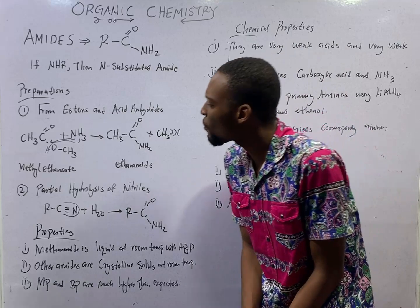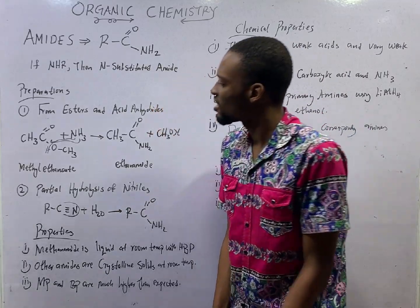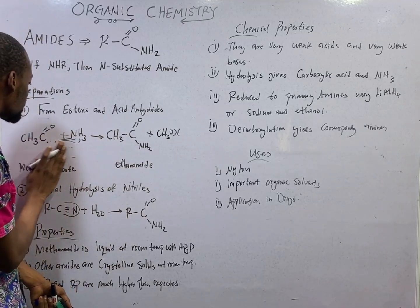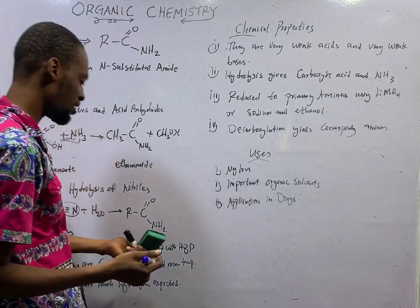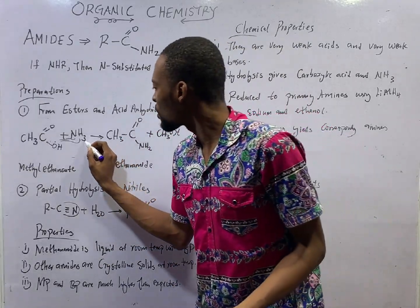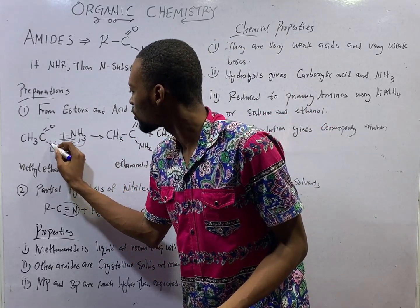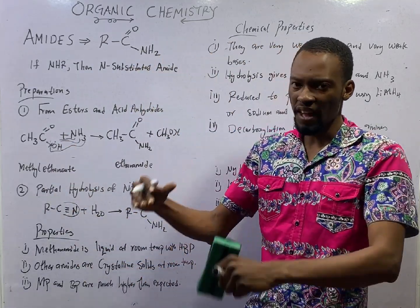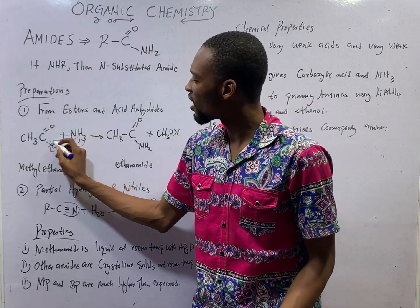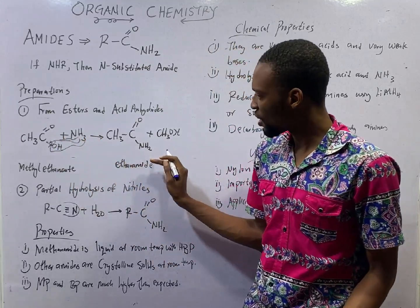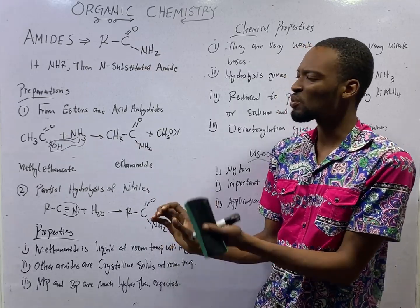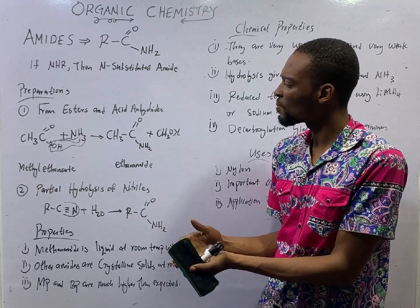Also, when ammonia reacts with acids — in a carboxylic acid you have OH here — one hydrogen in ammonia will come here to give you HOH or H2O, that is water. The remaining NH2 will come and attach here to give you amides. So from esters and from acids, when they react with ammonia, you definitely form amides.